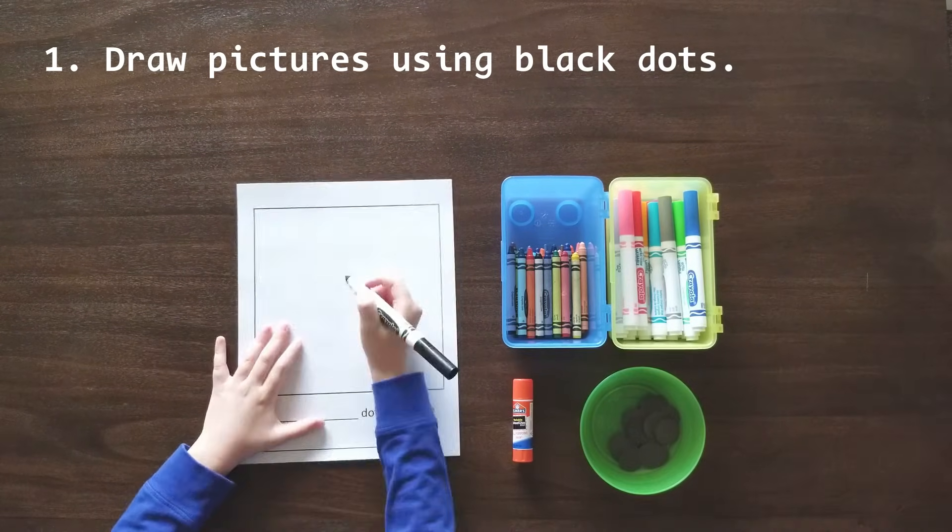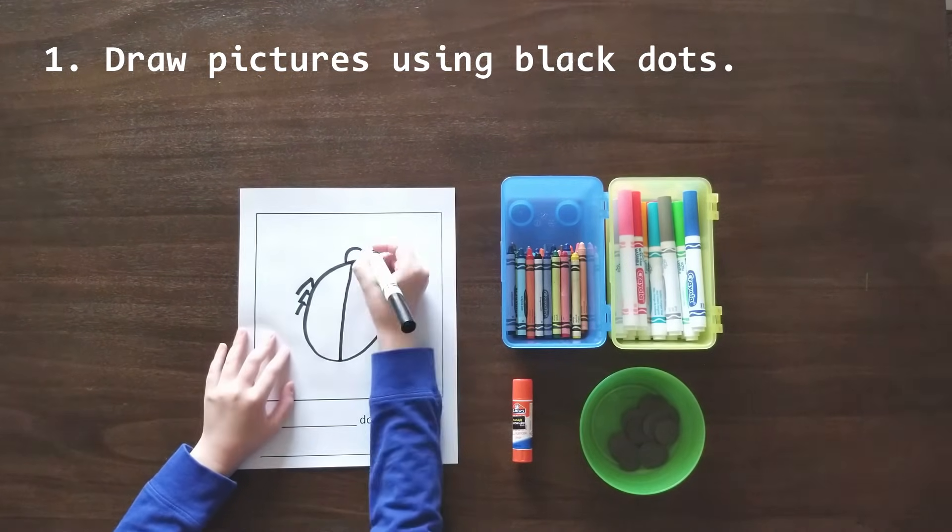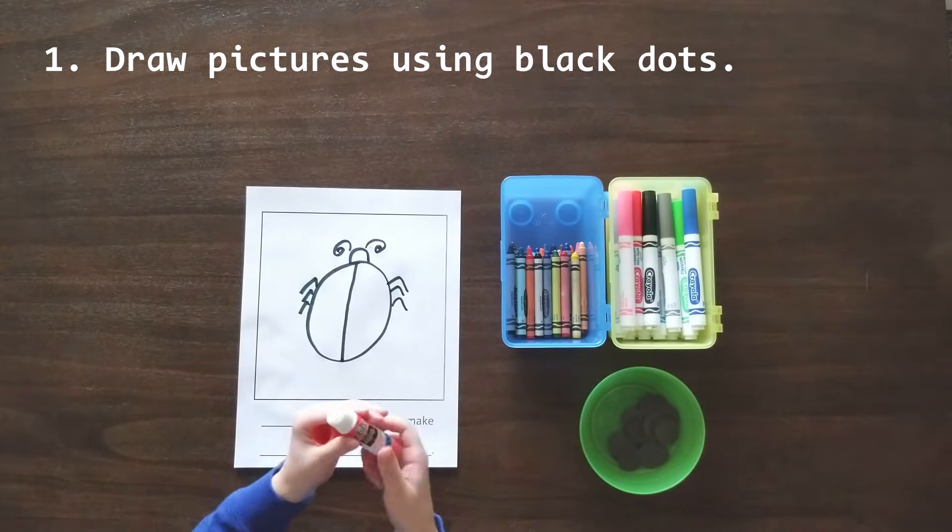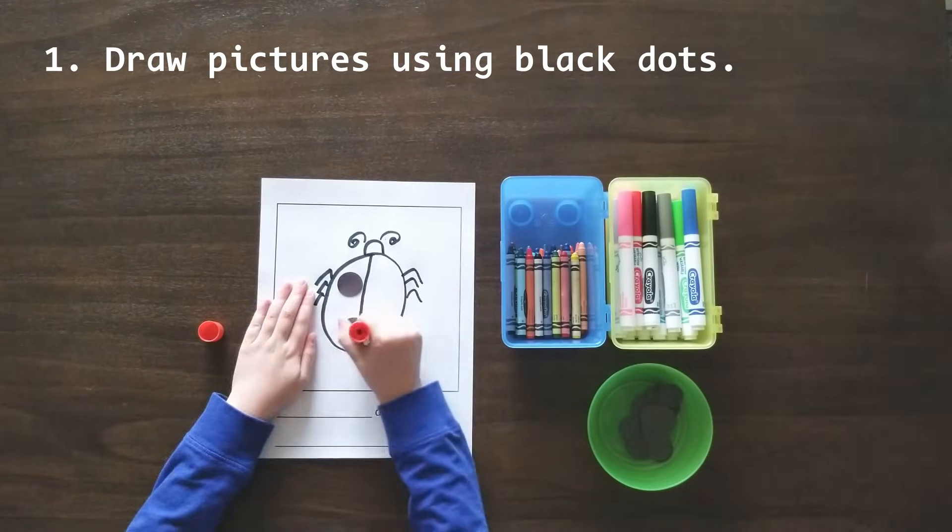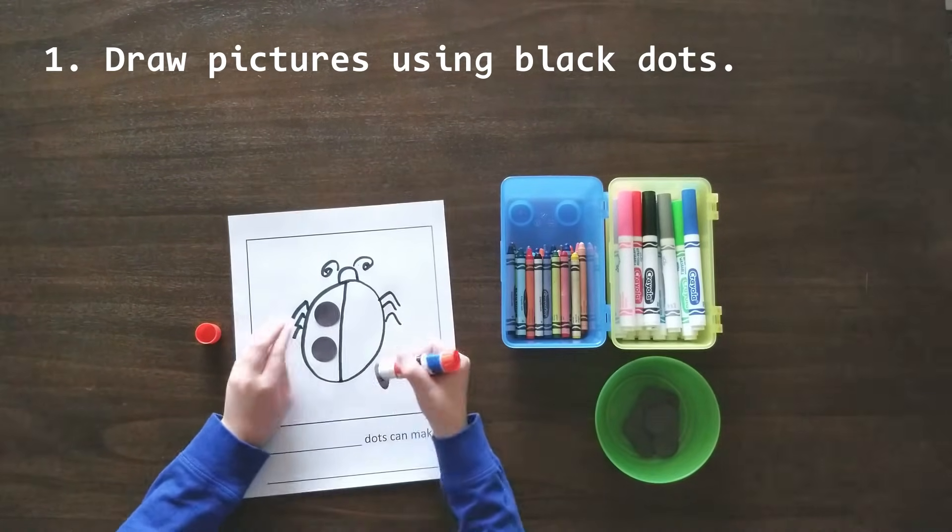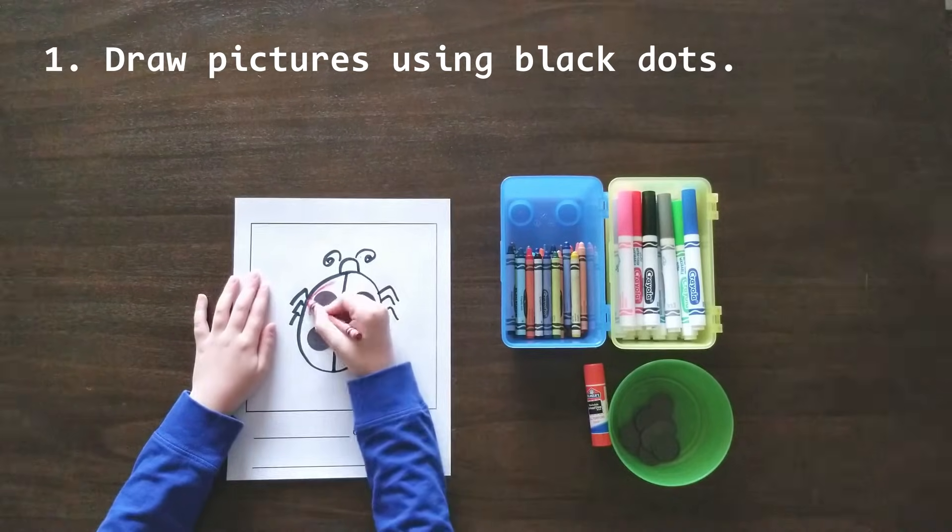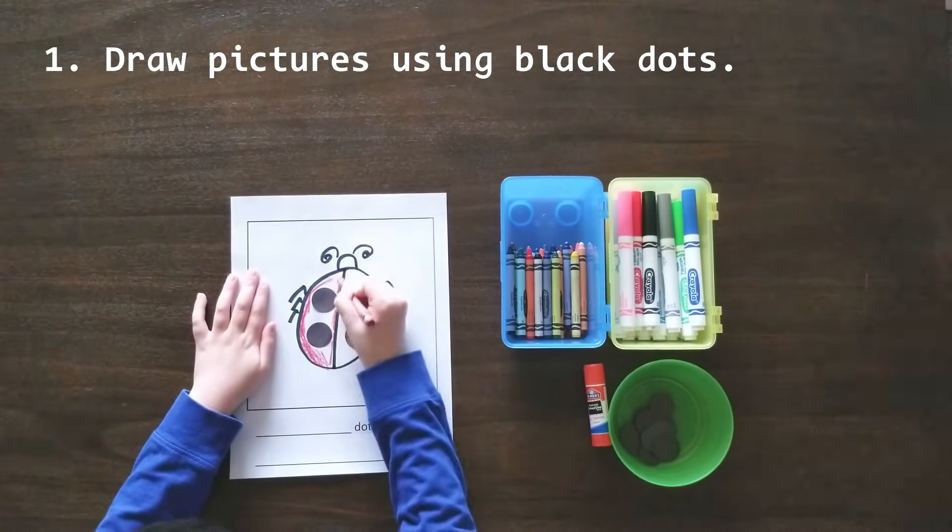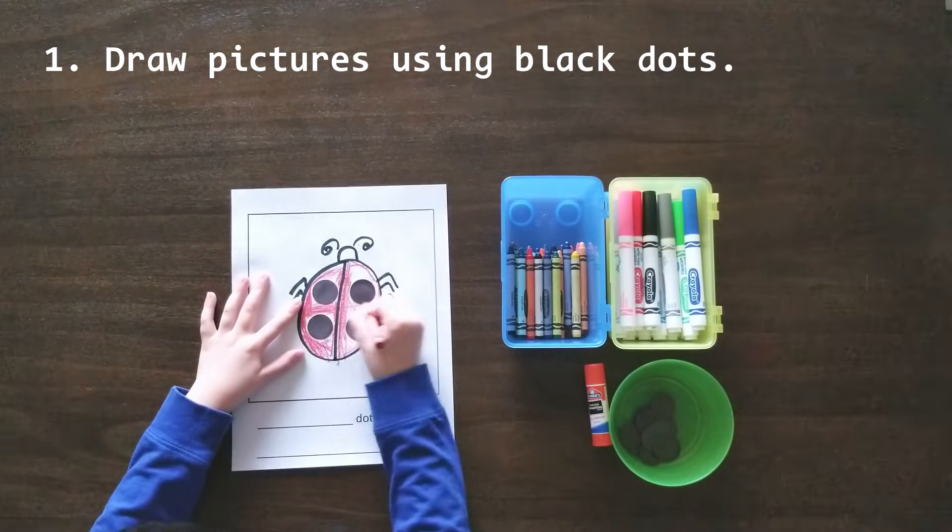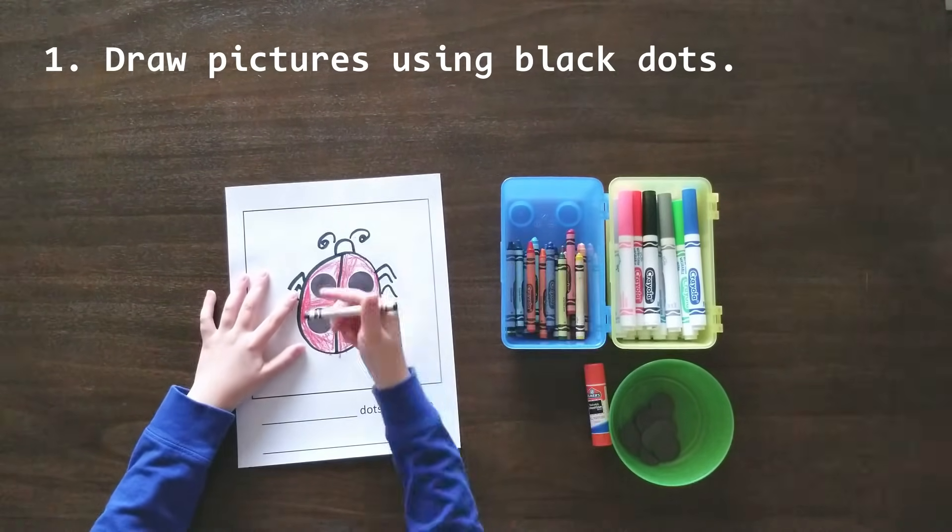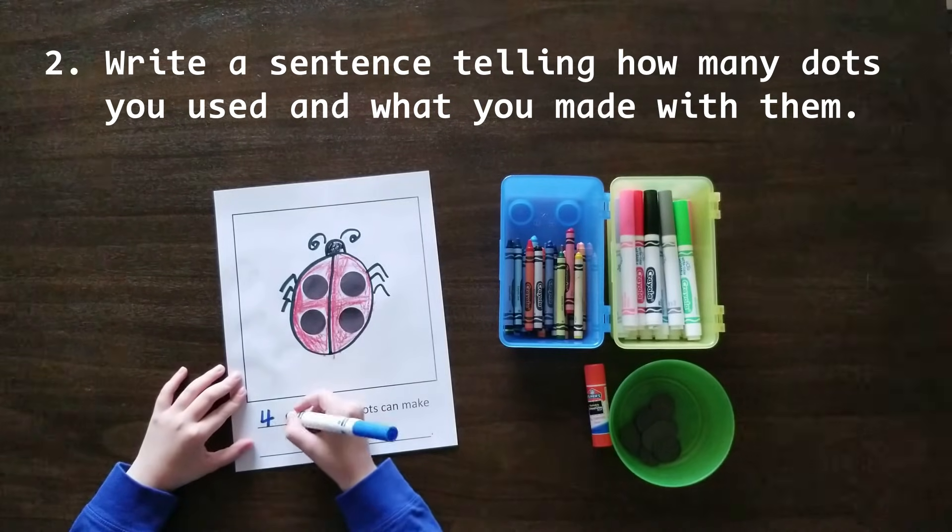First, kids are going to draw their own pictures using black dots. And then write a sentence telling how many dots you used and what you made with them.